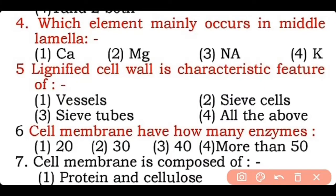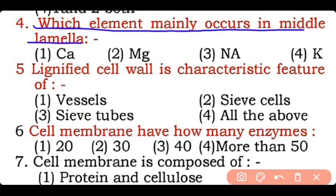Question 4: Which element mainly occurs in the middle lamella — calcium, magnesium, sodium, or potassium? Correct answer is option one — calcium is the most abundant element present in the middle lamella, in the form of calcium pectate.